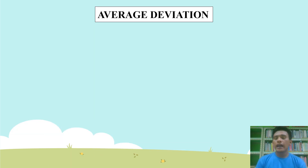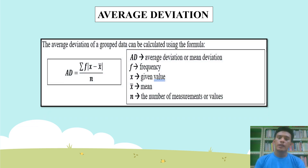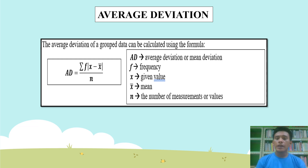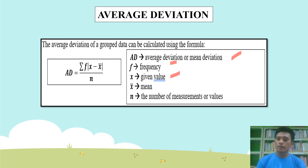Next will be the average deviation. The average deviation of grouped data can be calculated using the formula: average deviation is equal to the summation of the frequency times the absolute value of X minus the mean, divided by N. Where F is the frequency, AD stands for the average deviation, X is the given value, the symbol represents our mean, and N stands for the number of measurements or the number of data.